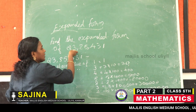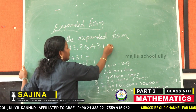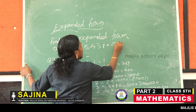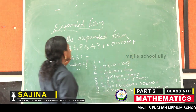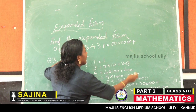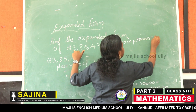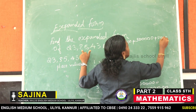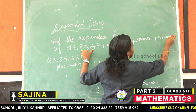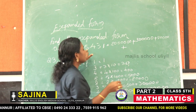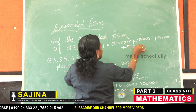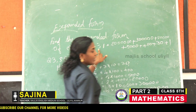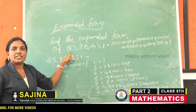Therefore, expanded form of twenty-three lakh eighty-five thousand four hundred thirty-one is equal to: twenty lakh plus three lakh plus eighty thousand plus five thousand plus four hundred plus thirty plus one. This is the expanded form of this number.